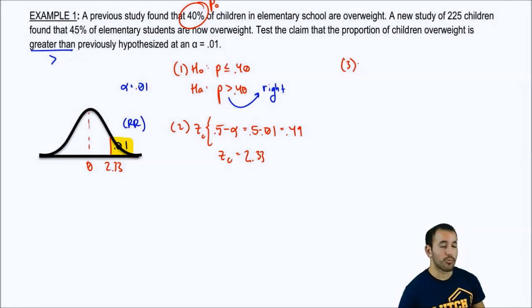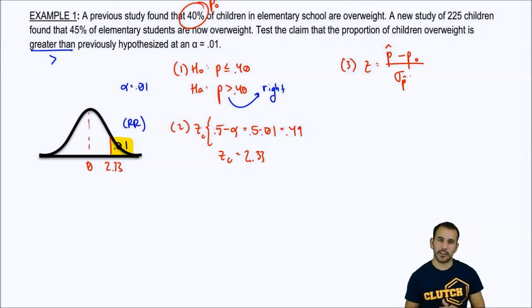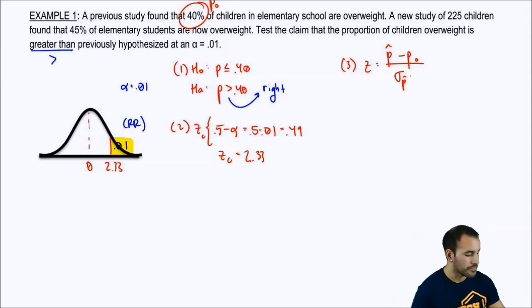Let's go ahead and move on to step number three. What is that test statistic? How far away is our sample in terms of standard deviations away from what the null says the actual average should be? So, Z is X bar minus the mean from the null hypothesis, I lied, P hat minus the proportion from our null hypothesis, divided by our standard error for those sample proportions, right? So, let's go ahead and first things first, let's get that standard error before we hop back into that problem.